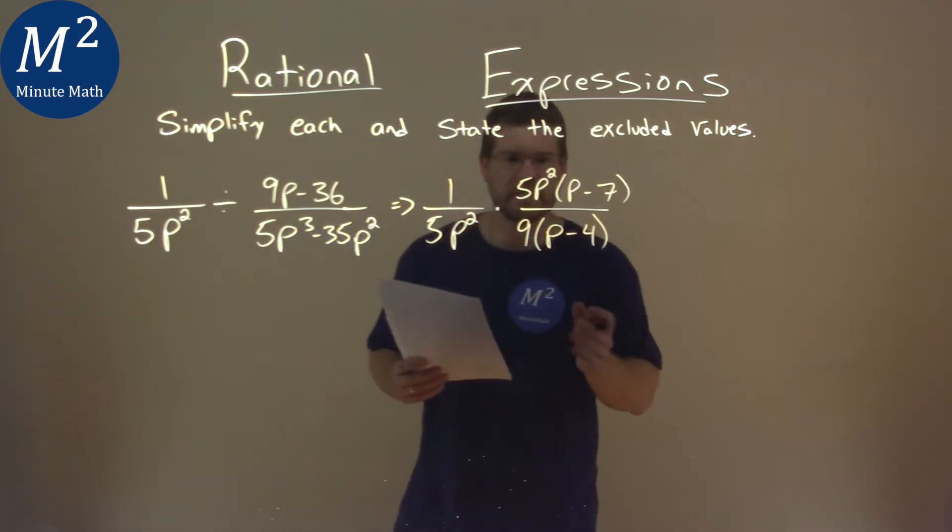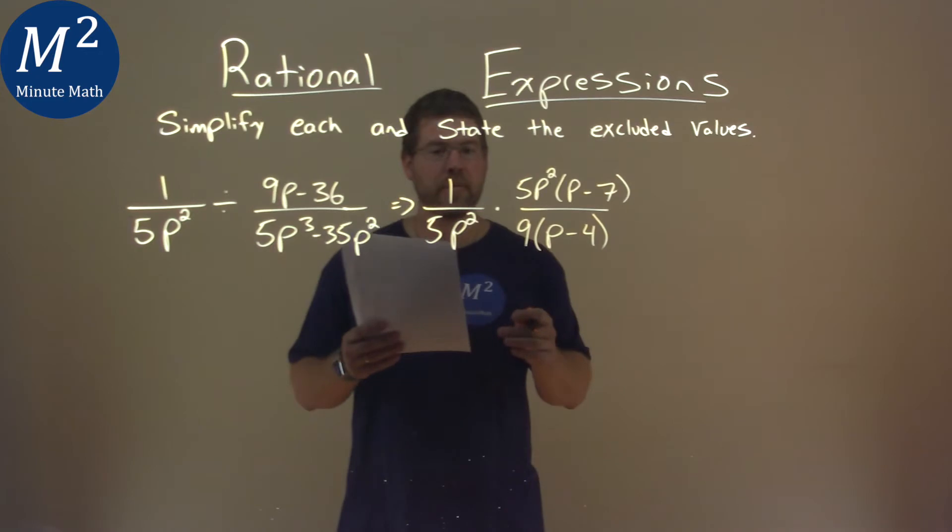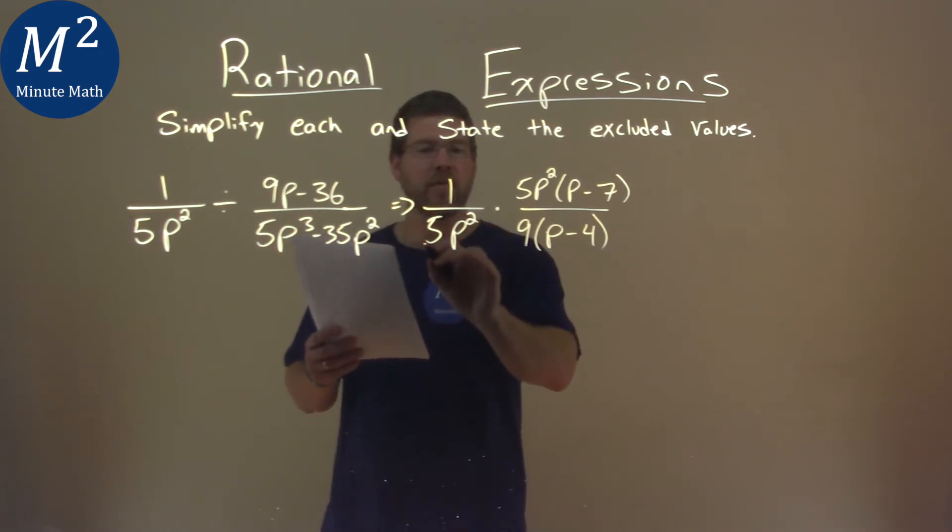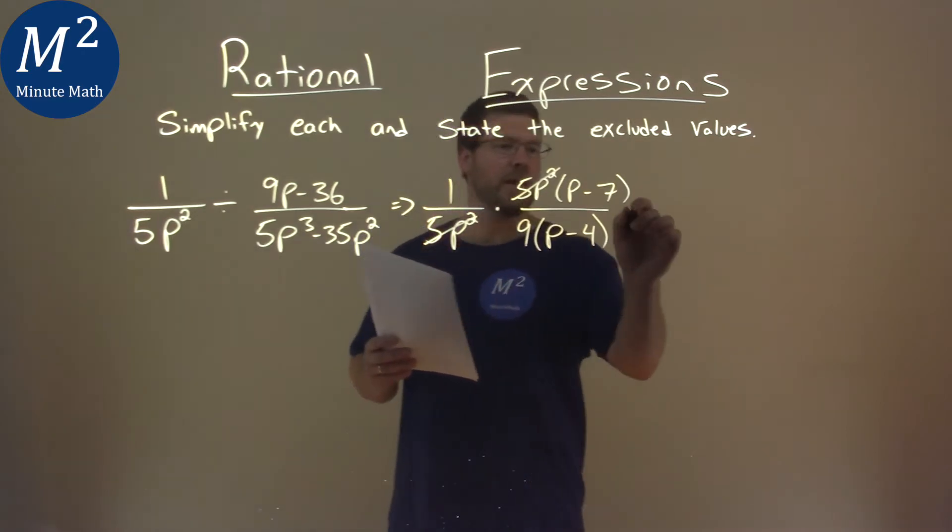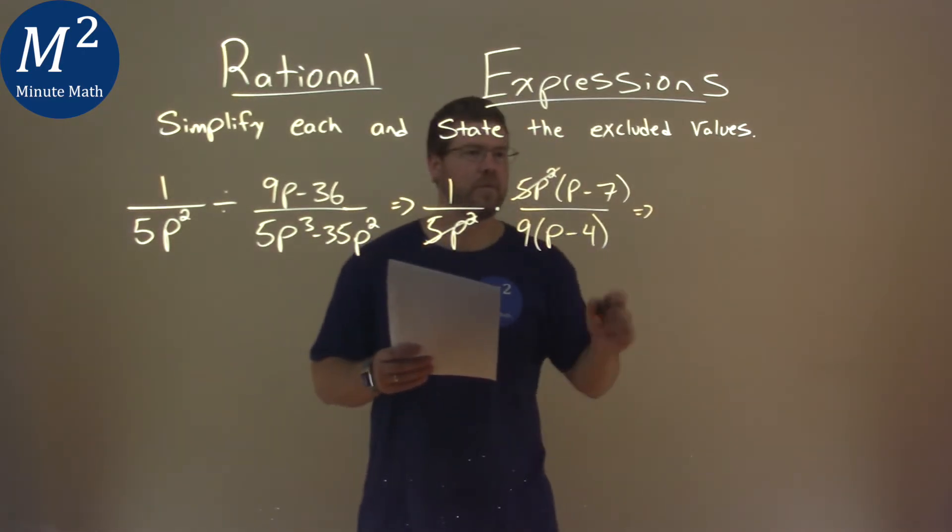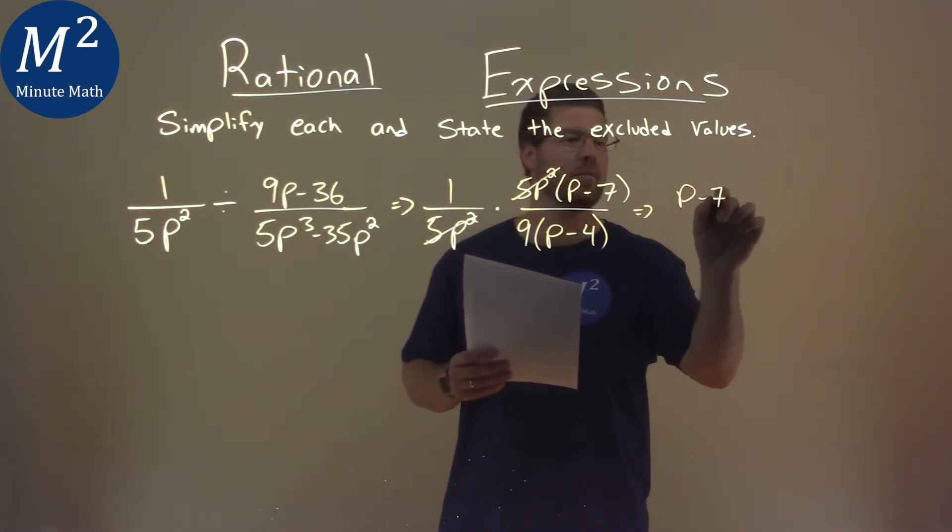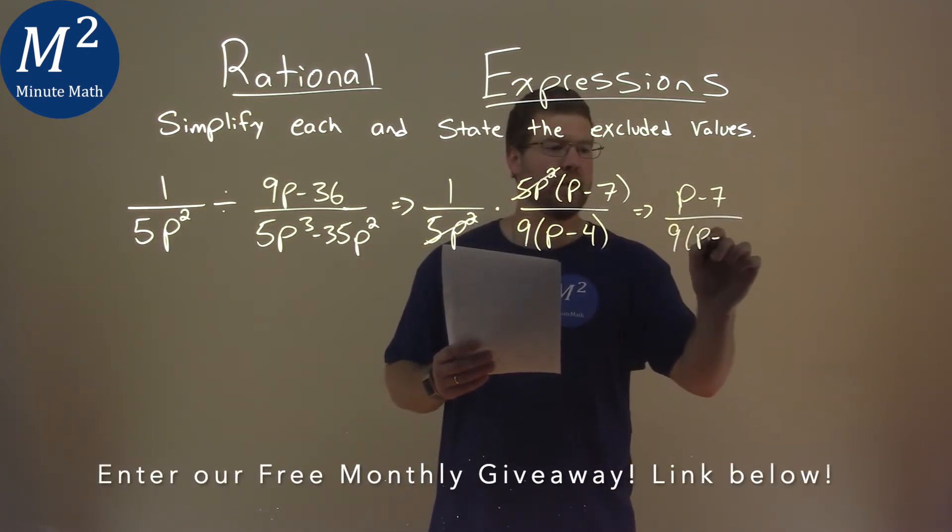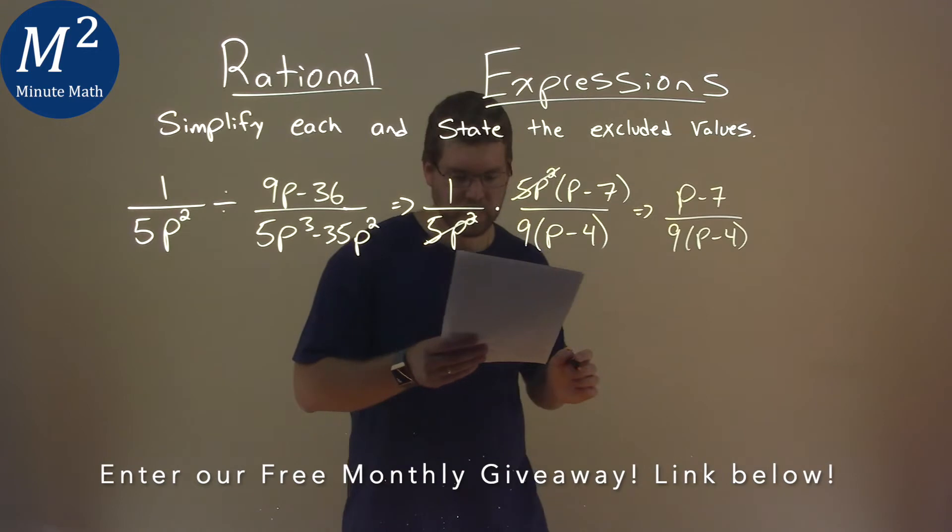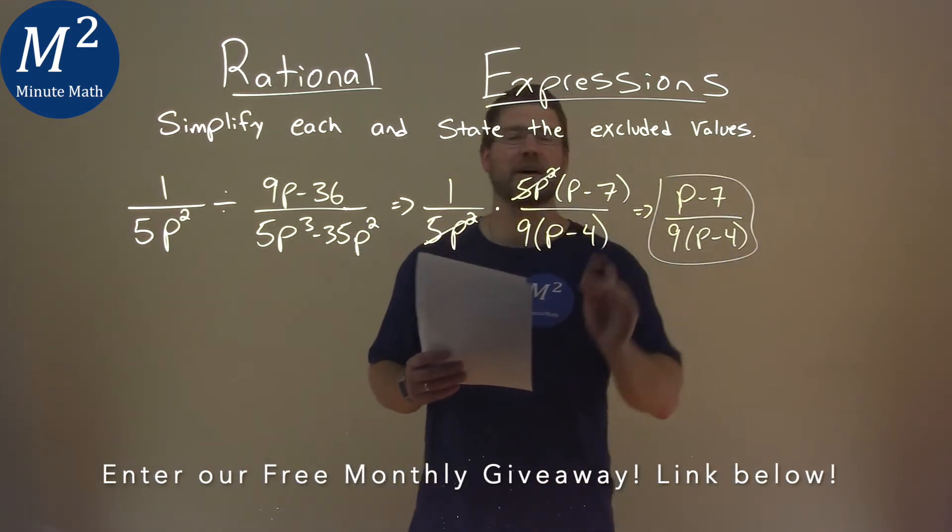Now that's a little easier to see what we can cancel out. I have a 5p squared here, and a 5p squared. They cancel, and so now we're left with just that p minus 7 in the numerator, and the denominator, that 9 times p minus 4. And that is our final simplified expression.